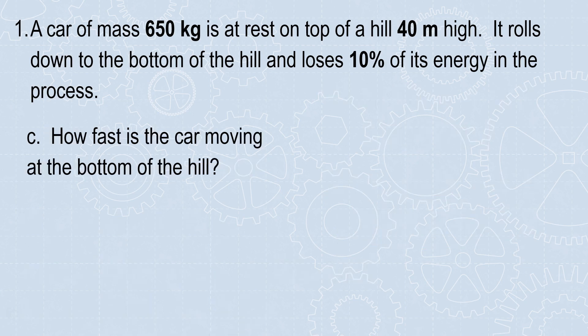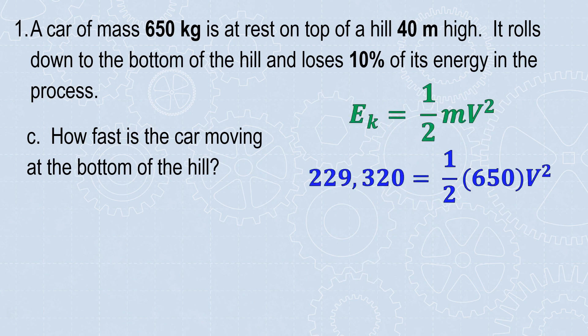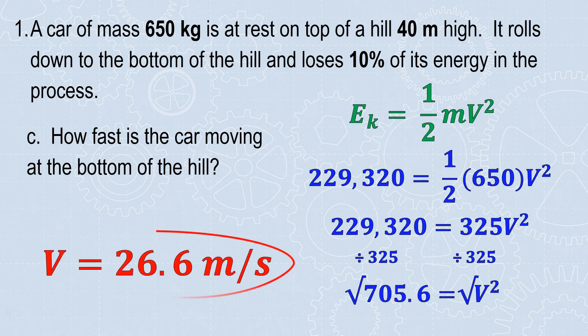To find how fast the car's moving at the bottom of the hill, we're dealing with kinetic energy. So I plug in what I know. I know how much energy is left. We said 10% was lost, so we only have 229,320 joules of useful energy. We know the mass. I'm going to turn something I don't know into something I do know. That's a messy multi-step equation. Now it's a two-step equation. My velocity, the variable I'm solving for, is being squared, and then it's multiplied by 325. So I'm going to go in the opposite order. I'm going to divide by 325, and then take the square root of both sides. So it's moving about 26.6 meters per second.